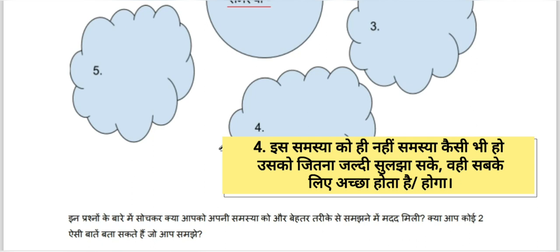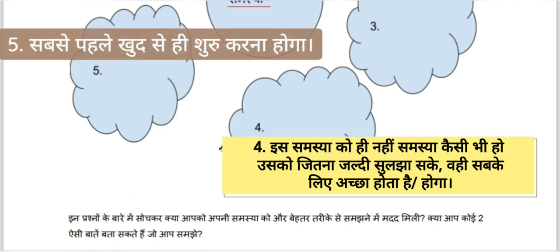This does not apply only to this problem — it applies to all problems: the very first step is to start with yourself. You must start with yourself first. For example, do not burn leaves — the Delhi government and other state governments have also given this instruction, though many people do not follow it. Secondly, reduce the use of fuel-powered vehicles; for 1-2 km you can walk or use a cycle. You have to start with yourself first, and others will follow.